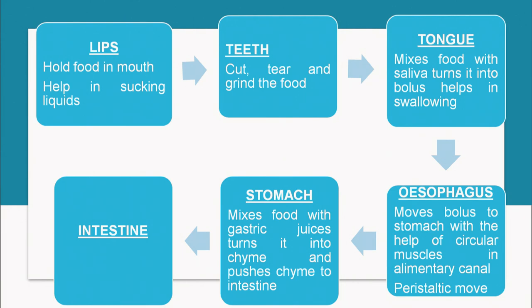The stomach mixes the food with gastric juice and turns it into chyme, then pushes the chyme into the intestine. In the small intestine, the maximum absorption of nutrients takes place, while in the large intestine, water is absorbed. Due to peristaltic movement, food moves from the small intestine to the large intestine, and ultimately the waste material is thrown out of the body.